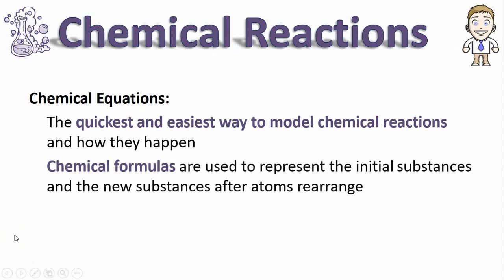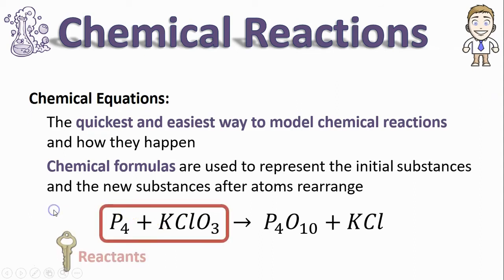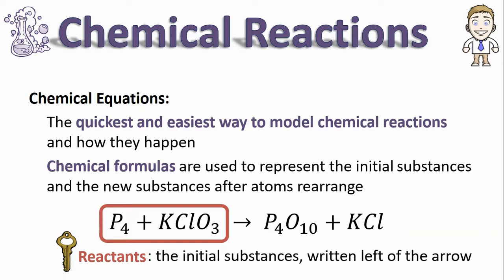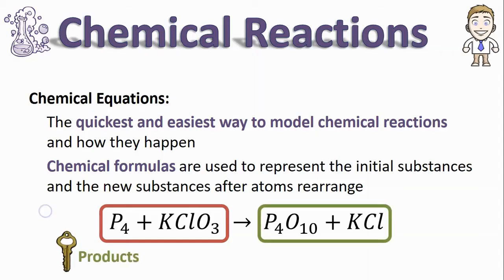You've seen chemical equations before, both in this series of videos and probably other science classes too. A chemical equation starts with the formulas for what we call the reactants. The reactants are the initial substances, and they're written on the left-hand side of the arrow.